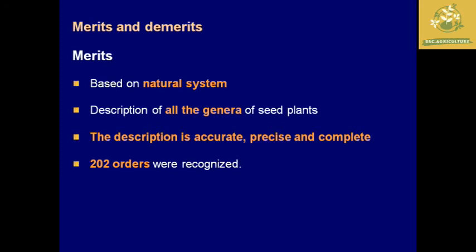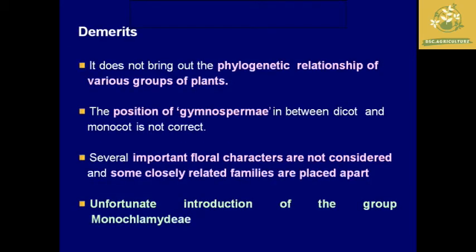The merits of Bentham and Hooker's classification are that it is mainly based on the natural system; all genera of seed plants are described, and the descriptions are accurate, precise, and complete. The 202 orders are easily recognized and used by future scientists. The demerits include: it does not bring out the phylogenetic relationship of various groups of plants; the position of gymnosperms within dicots and monocots is not correct; and some closely related plants are placed far apart.